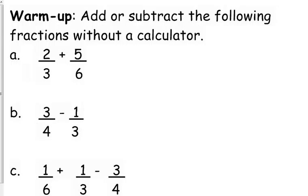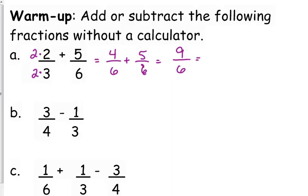If we're trying to add two-thirds and five-sixths, the common denominator there is six. What you need to do to achieve that common denominator is multiply three by two, but if you multiply the denominator by two, you've got to multiply the numerator by two. So that is four-sixths plus five-sixths, which is nine over six, which will simplify to three over two.